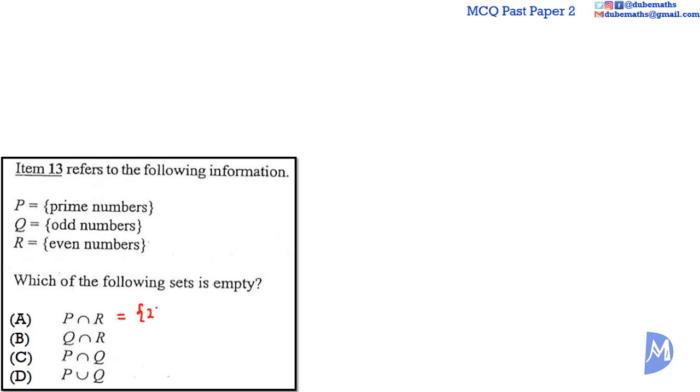Question 13. P is the set of prime numbers, Q is the set of odd numbers, and R is the set of even numbers. Which of the following sets is empty? Is P intersect R null? Is there any prime number that is also even? Yes, 2, but only 2. So P intersect R equals {2}, not null. Is Q intersect R null? There are no odd numbers that are also even, so Q intersect R is the null set. The answer is B.